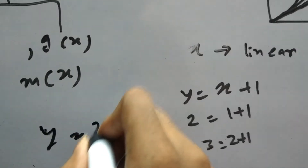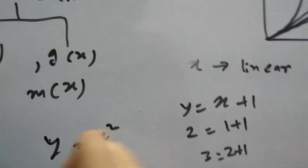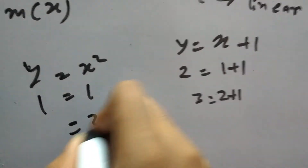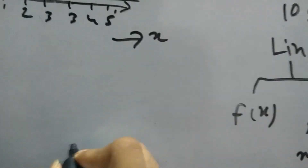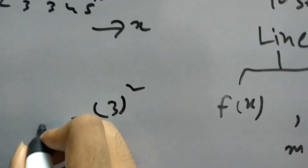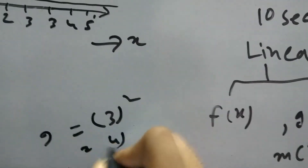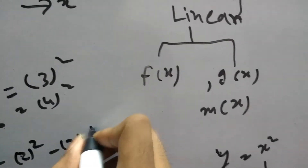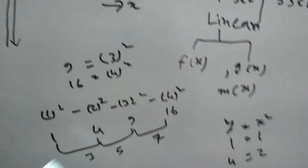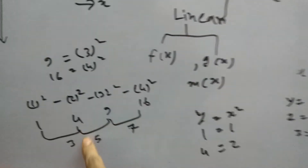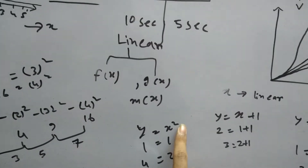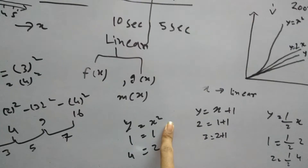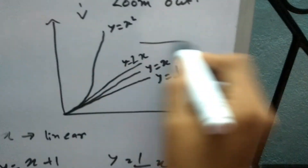In contrast, for y = x²: when x is 1, y is 1; x is 2, y is 4; x is 3, y is 9; x is 4, y is 16. The differences between successive values keep increasing — 1, 4, 9, 16 — so the graph gets steeper and steeper. It is not showing linear characteristics; it is showing quadratic characteristics. That's why this type of function would not come under the linear category.